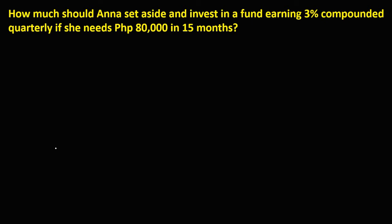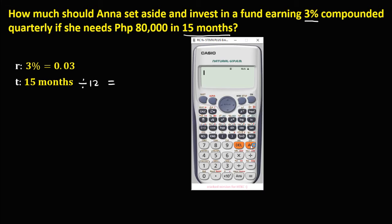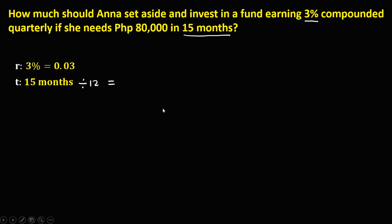First, we need to list all the given. For the rate, we have 3%, and 3% in decimal is 0.03. Then for the time, since it's 15 months, we need to convert this to years, and 1 year is equal to 12 months. So we divide 15 months by 12, giving us a time of 1.25 years.